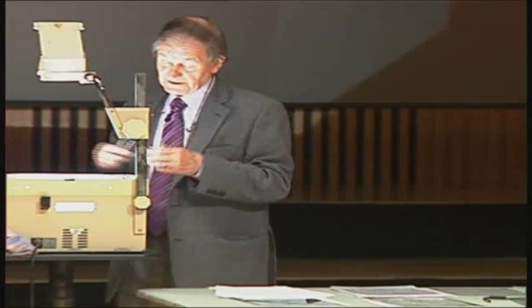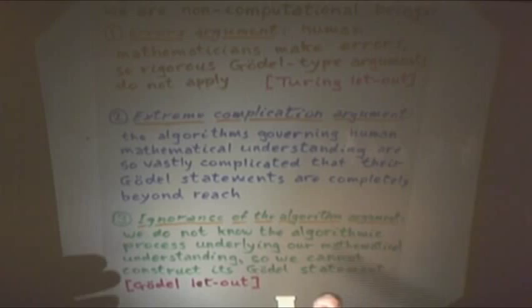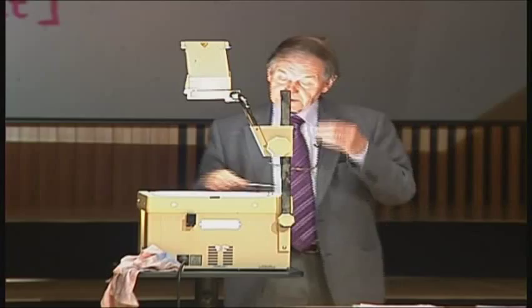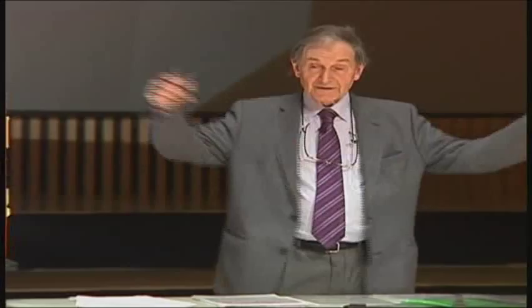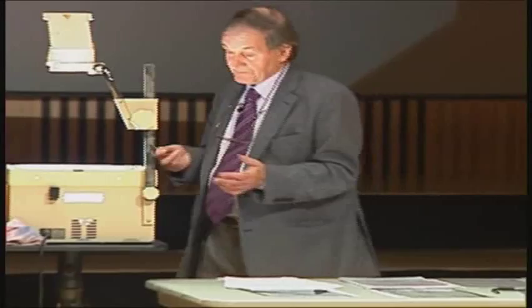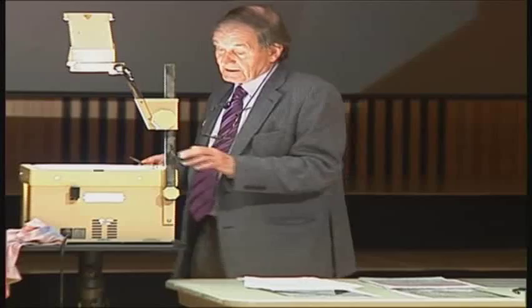The two other arguments people mainly make are: first, the extreme complication argument — the algorithms governing human mathematical understanding are so vastly complicated that their Gödel statements are completely beyond reach. I don't think that's a terribly good argument. Consider Euclid's argument that there are infinitely many primes — he shows that if you thought you had the biggest prime, you can find a bigger one. Even if that number were so enormously huge you could never write it down, that's not part of the argument. The size of the number doesn't affect the reasoning.